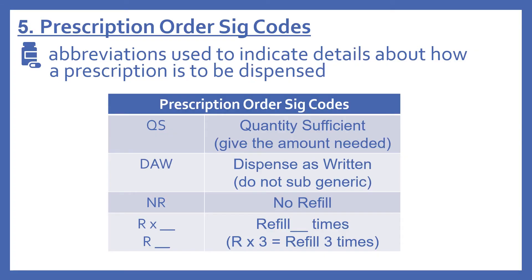Now we'll look at the prescription order SIG codes. These are abbreviations used to indicate details about how a prescription is to be dispensed — so they're not necessarily going to appear in the directions, but they'll be on the prescription. QS means quantity sufficient, written instead of a specific number, meaning just give the amount needed. DAW means dispense as written, meaning do not substitute a generic. NR means no refill. And R times a number means to refill that many times — so R×3 would mean refill three times.